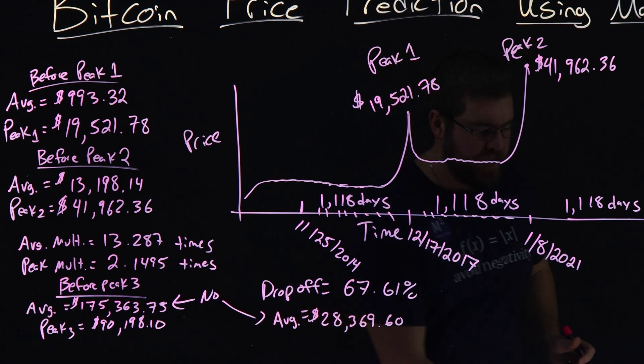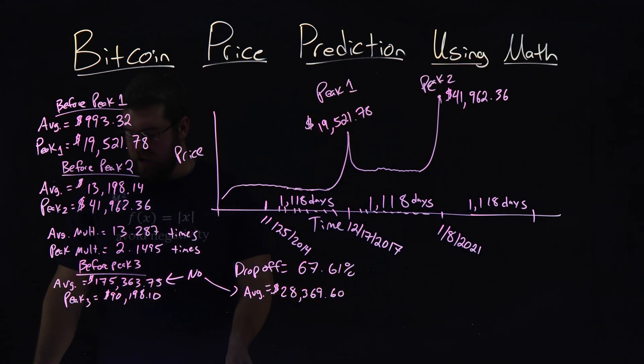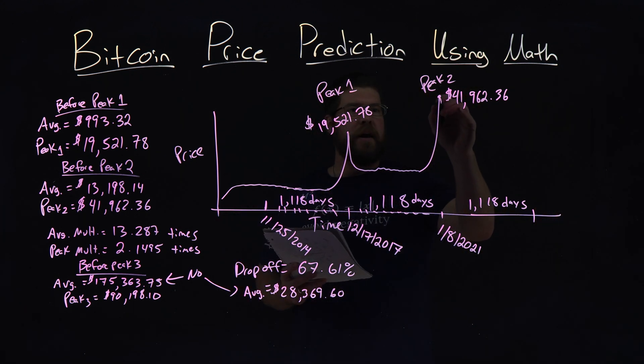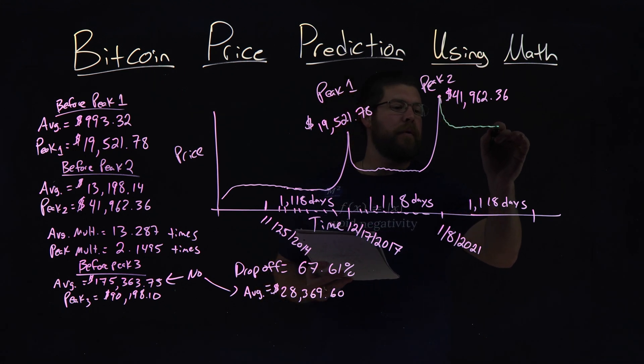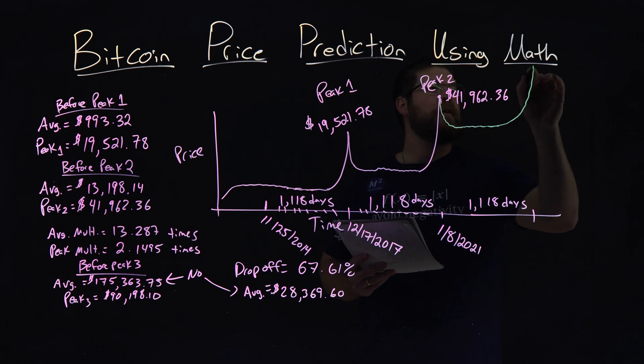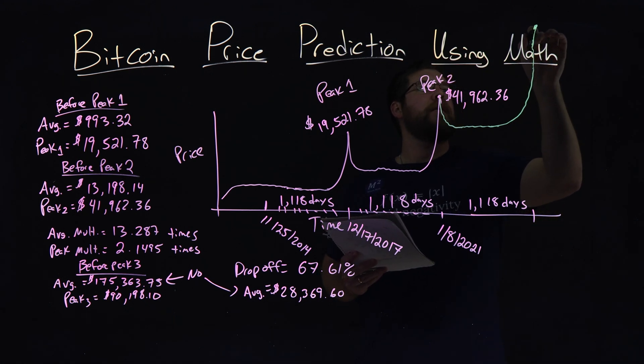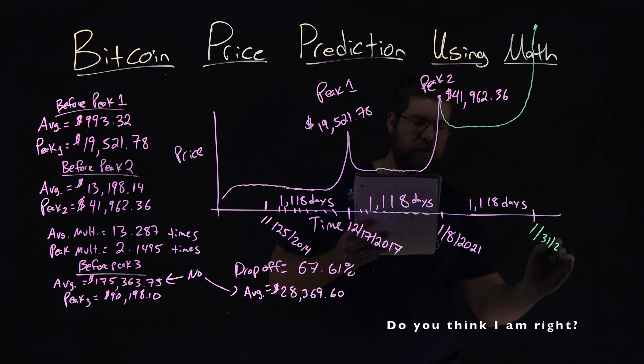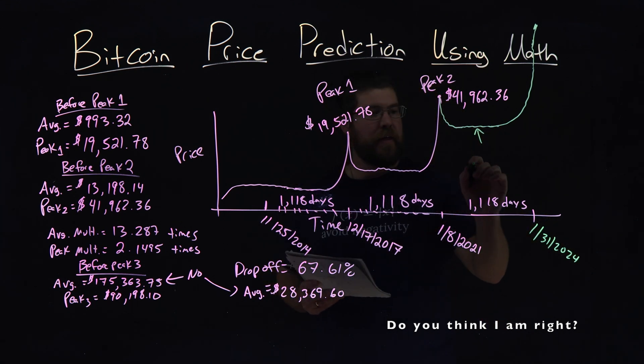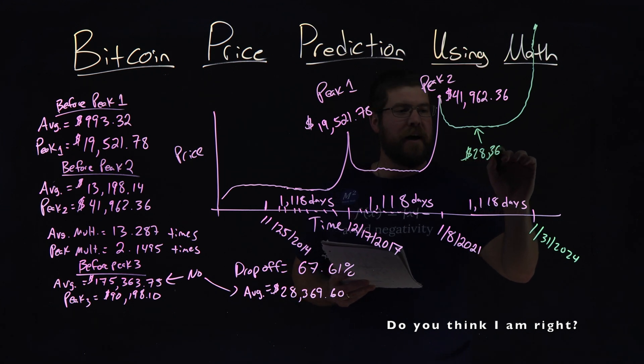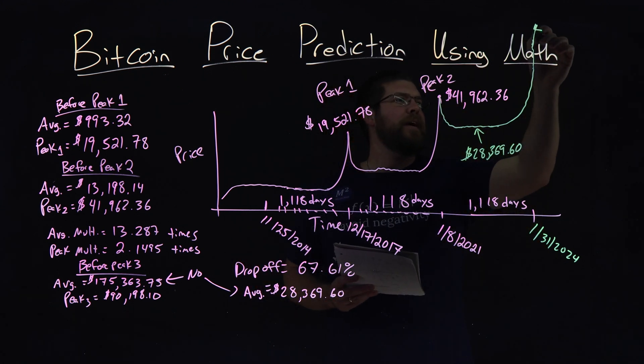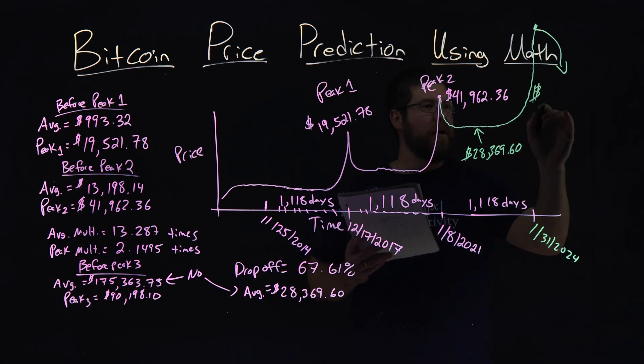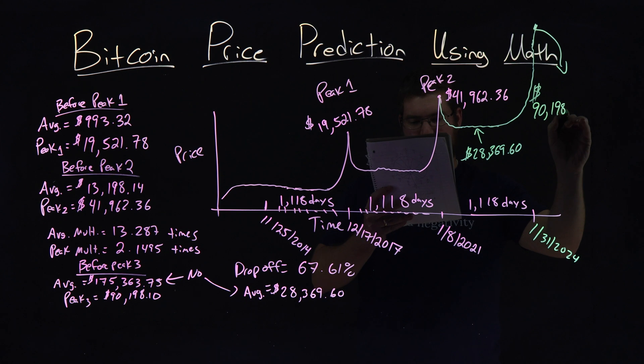And so that kind of makes a little more sense to match up with this graph here. So what do we have? Well, this is by that estimation that this will drop down here, go up, and then leading up to this date here, peak, and it goes past by the math here, right there. And what does that come out to be? This date here would be January 31st, 2024. Our average value here would be that $28,369.60. It would average out, and we would get a peak value, dollar amount overall, that would peak again, have a nice little bubble of $90,198.10.